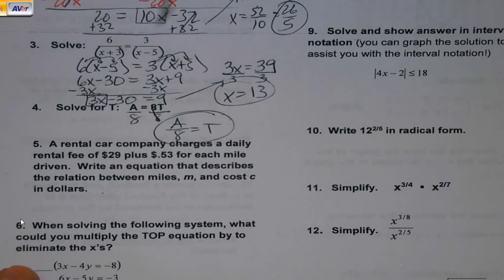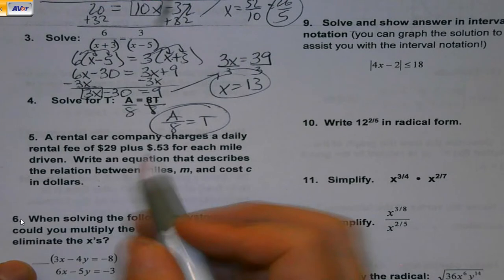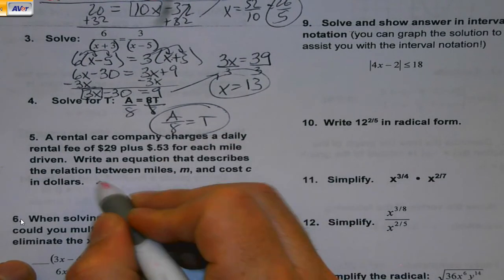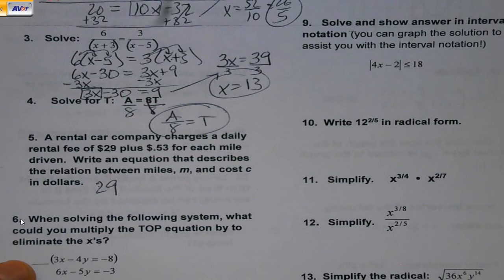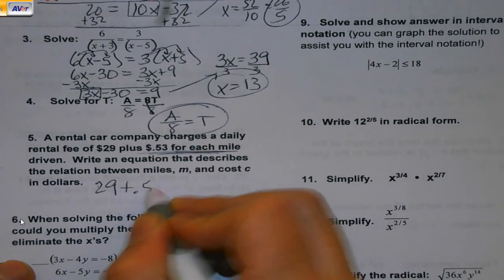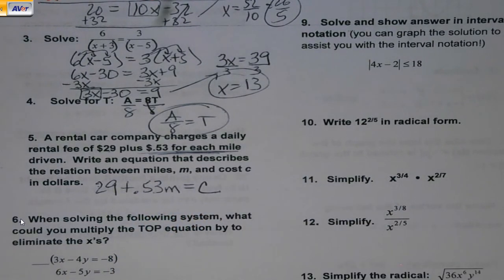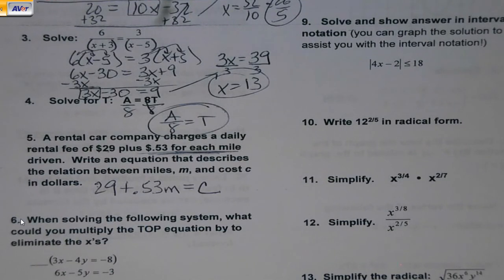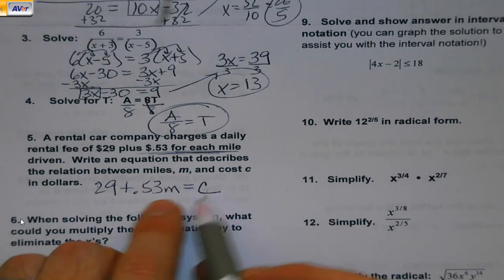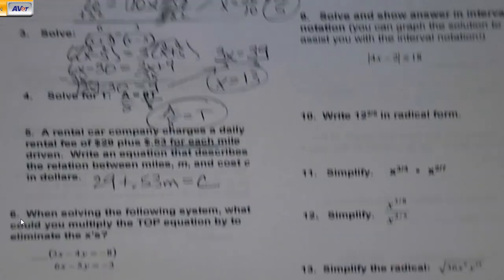Rental car company charges a daily rental fee at $29 plus 53 cents per mile driven. Write an equation that describes the relation between miles and cost. I'm going to pay the $29 no matter what. So it doesn't get a variable. Because it's not going to change. 53 cents for each mile though does. So that's where the M has to go. And those two things together make my cost. Make sure that you're paying attention to both variables.